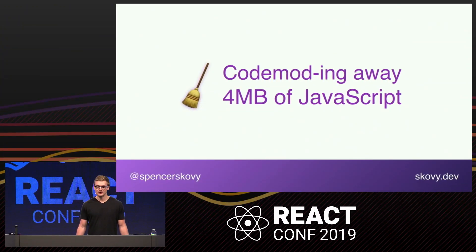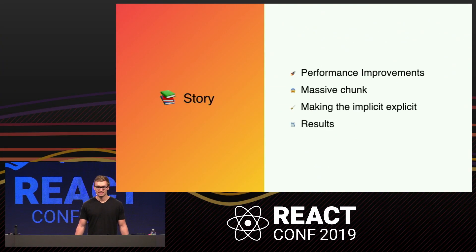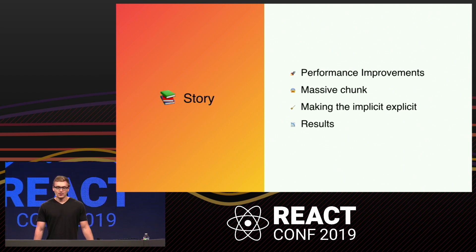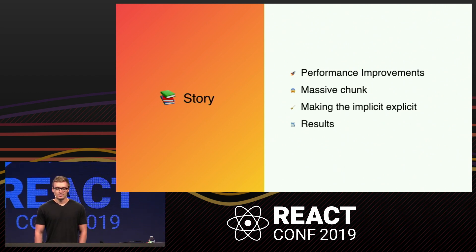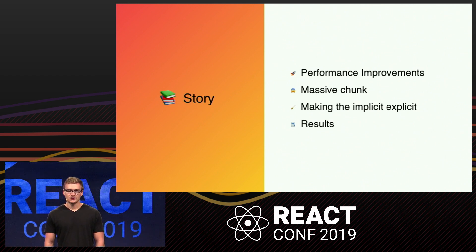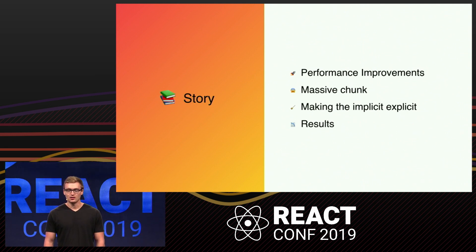It began with originally setting out to make some general front-end performance improvements — namely, introducing code splitting to break apart a single large bundle into many smaller chunks for the associated performance benefits. This led to discovering a chunk that was surprisingly large in comparison to all of the other chunks in the final output.